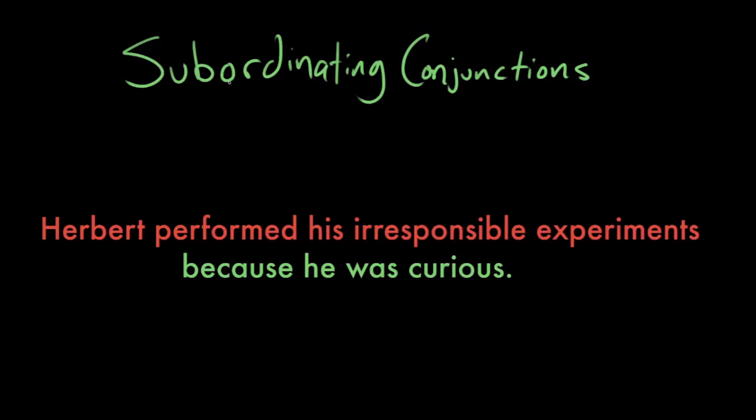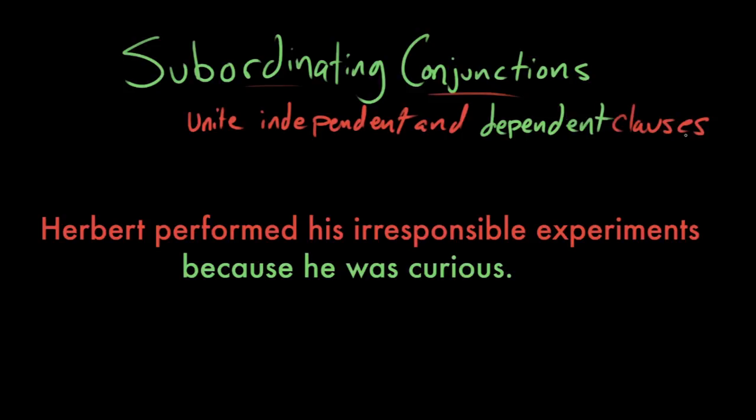This is a pretty complicated topic, because in order to understand subordinating conjunctions, you have to understand the difference between an independent and a dependent clause, because that's what subordinating conjunctions do—they unite independent and dependent clauses. But what are these? What is an independent and a dependent clause?